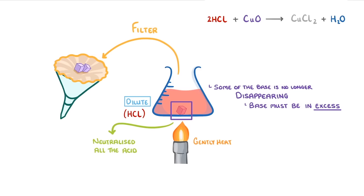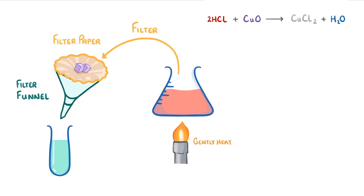The next step is to filter out all of this excess copper oxide, using filter paper and a filter funnel, and what we have left should be the dissolved form of our soluble salt, in this case copper chloride.